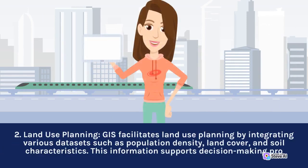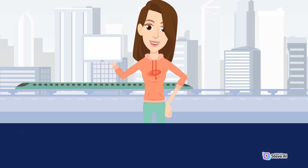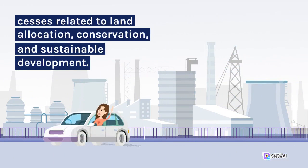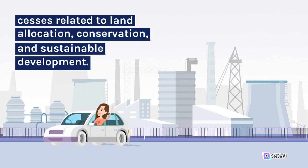2. Land Use Planning: GIS facilitates land use planning by integrating various data sets such as population density, land cover, and soil characteristics. This information supports decision-making processes related to land allocation, conservation, and sustainable development.